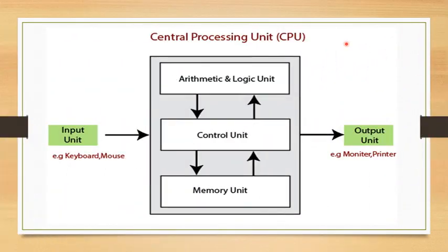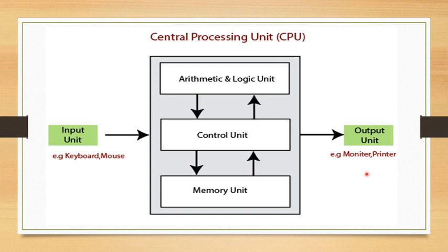Let's understand the structure of a CPU. A microprocessor has three major sub-units which you can see here: the Control Unit, Memory Unit or memory registers, and the Arithmetic and Logic Unit, which is the ALU. Whenever we type anything, input goes to the CPU and output we can see on the monitor or printer — for example, PowerPoint presentations prepared with keyboard and mouse, and printouts from a printer.